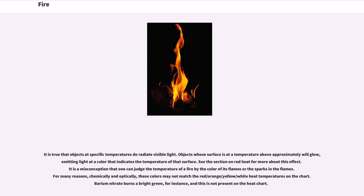It is true that objects at specific temperatures do radiate visible light. Objects whose surface is at a temperature above approximately a certain threshold will glow, emitting light at a color that indicates the temperature of that surface.